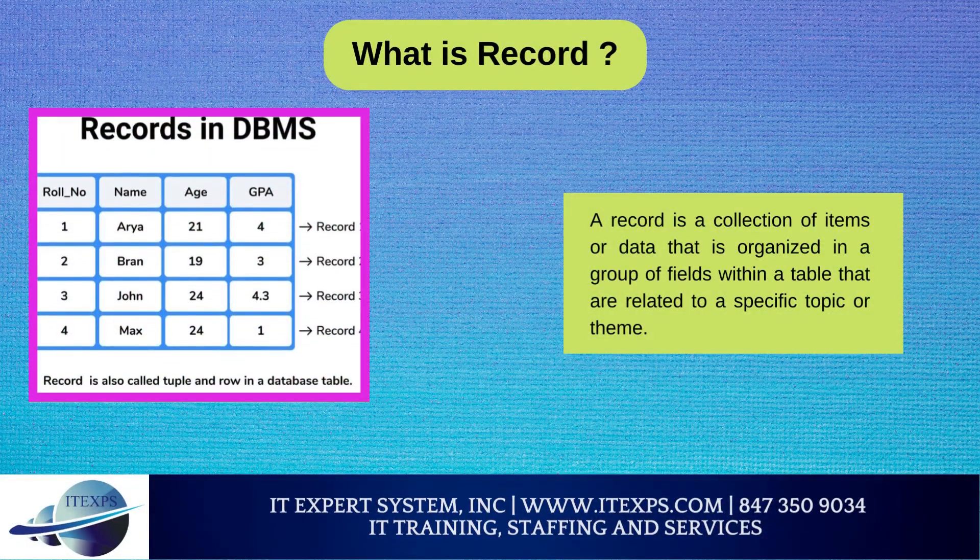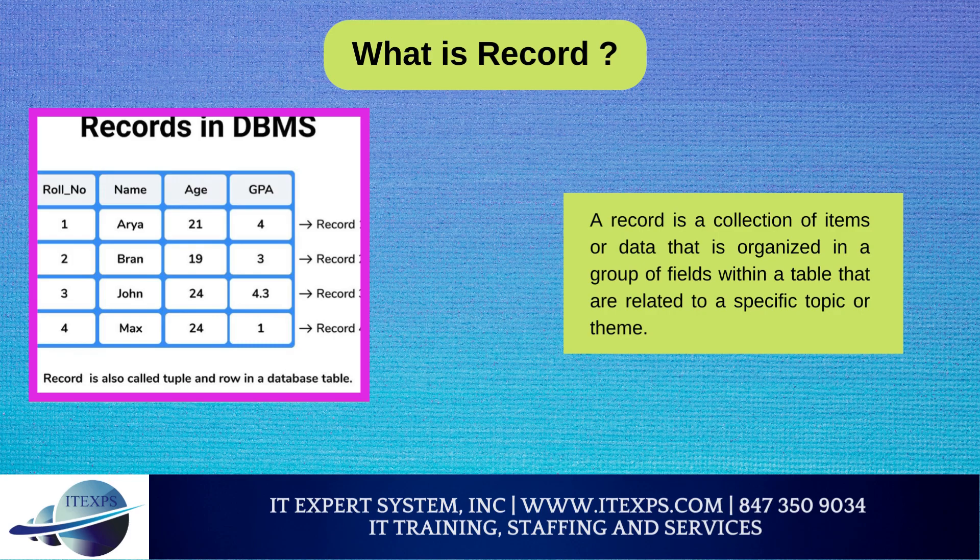A record is a collection of items or data that is organized in a group of fields within a table that are related to a specific topic or theme. For example, police departments keep records of criminals and the crimes for which they were arrested and charged. These police records often contain other pertinent information such as the date and time of arrest, court dates, and any fines or penalties imposed. Such records are often stored within a large database which includes multiple tables. Records are also often stored in spreadsheets like Microsoft Excel or Google Sheets, where rows represent individual records and columns contain relevant information pertaining to each record.